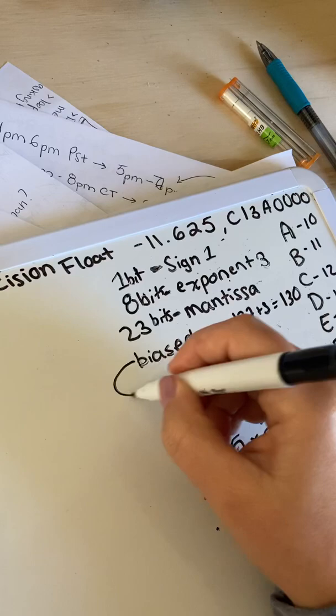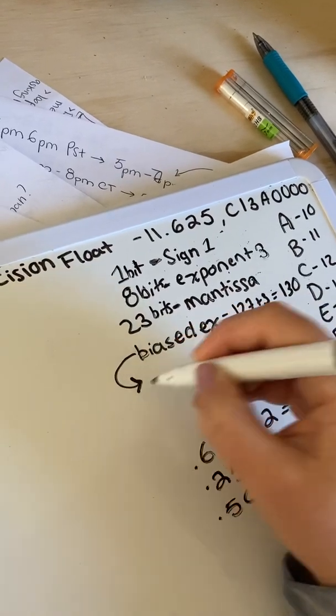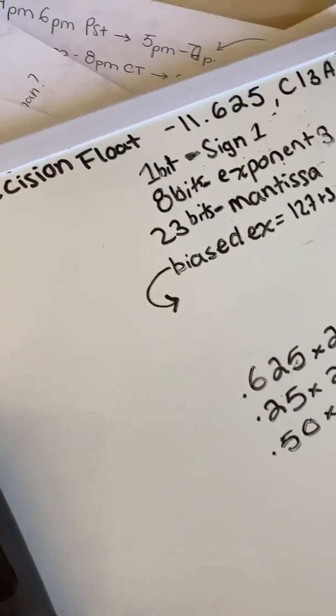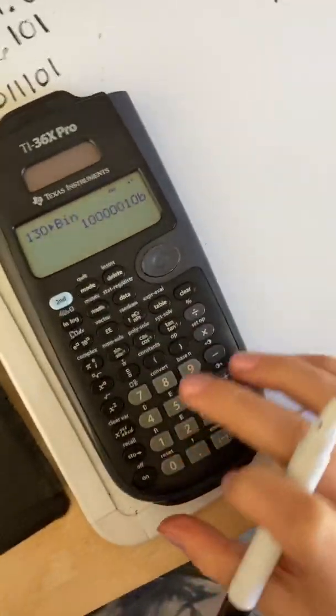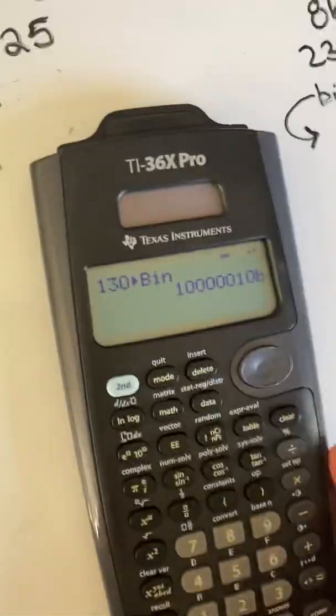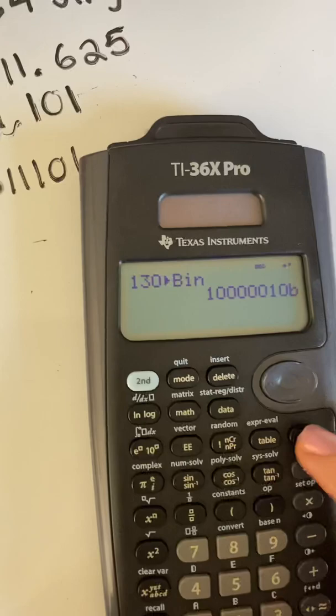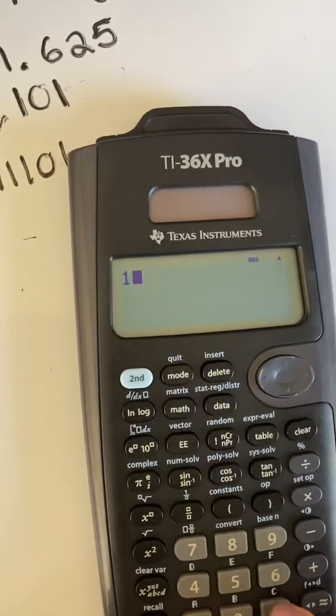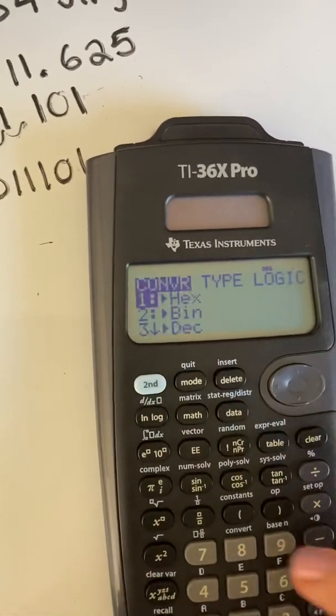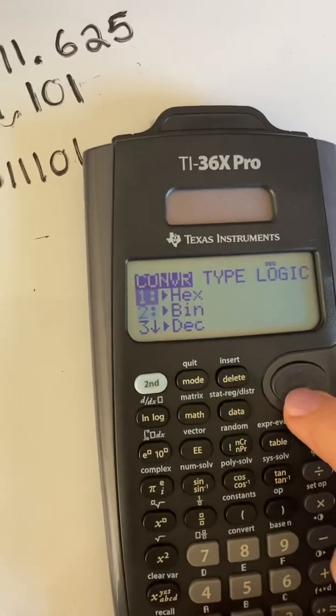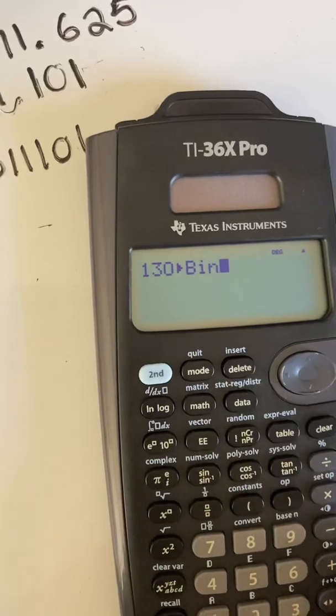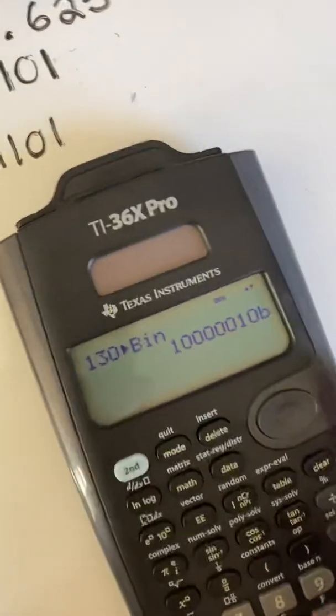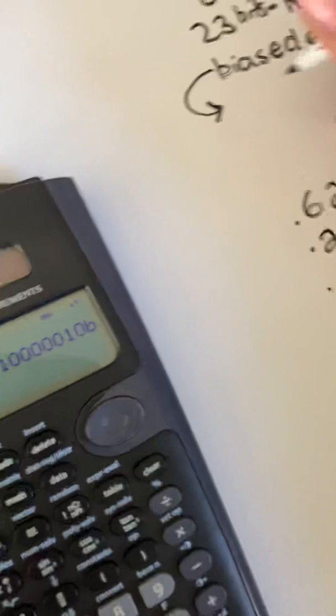So then the biased exponent, we need to put that into binary. So we can do that with the calculator. I've already done it here. If you want to see how you do it with this calculator, it's pretty straightforward. You put in the number that you want, second base, and then you just change it to whichever representation you want. Enter. And then you have your binary. So we're going to go ahead and write that down.